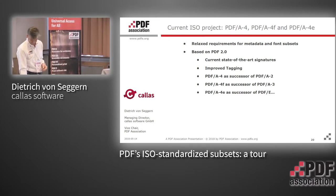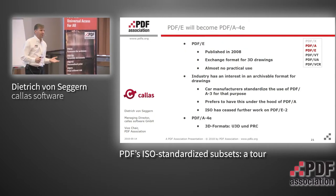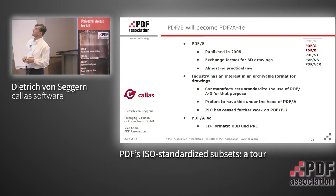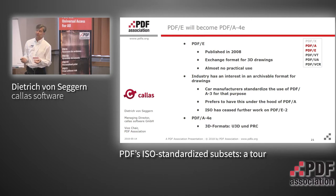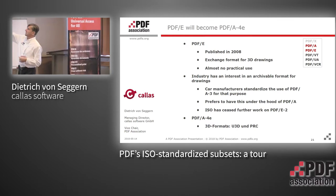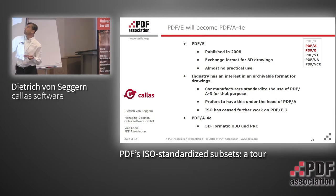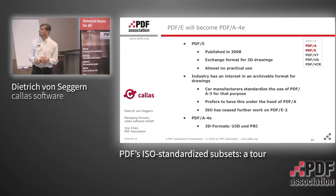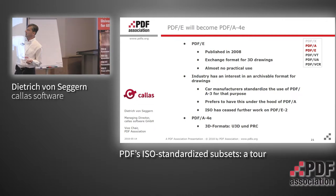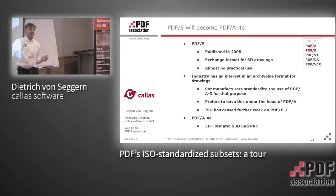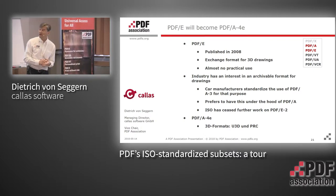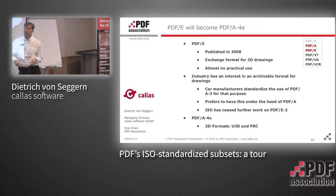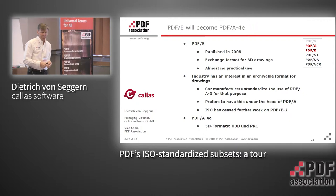There isn't much practical use for PDF/E as a separate standard. The German car manufacturing industry has created a standard and, instead of building it based on PDF/E, they built it on PDF/A-3. PDF/A-4-E has many similarities to PDF/A-4-F, because PDF/E and PDF/F both allow other file formats to be embedded into the PDF/A container.